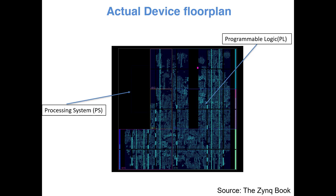This is the floor plan or die of an actual Zynq chip, which was shown in the previous lecture. You can see the large black area which is the PS where the processor and peripherals are sitting, and the large remaining area which is the PL — the FPGA fabric. These two portions are interfaced through the AXI interface so they can communicate with each other.